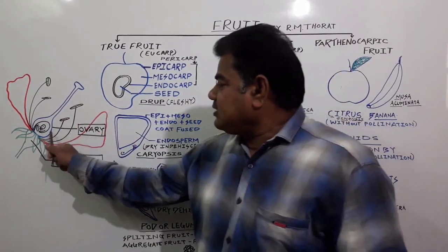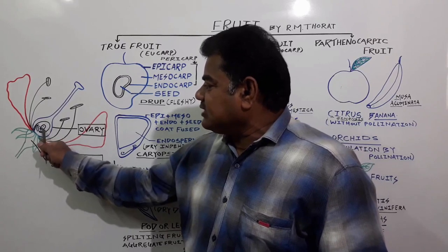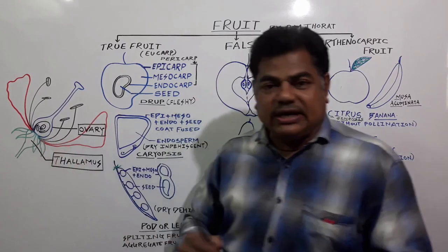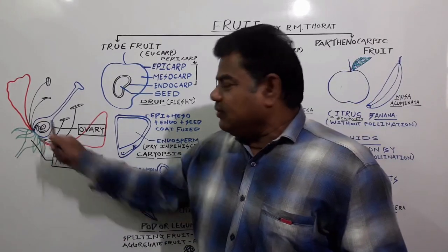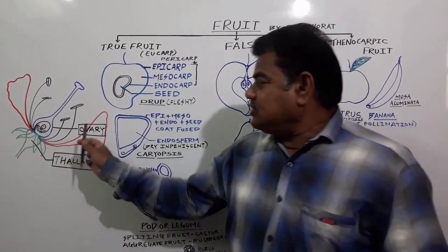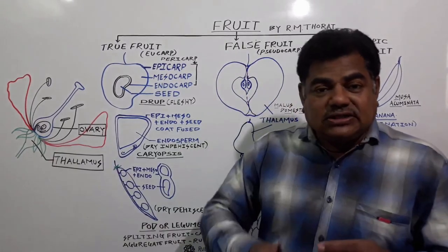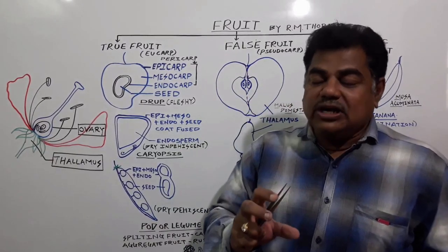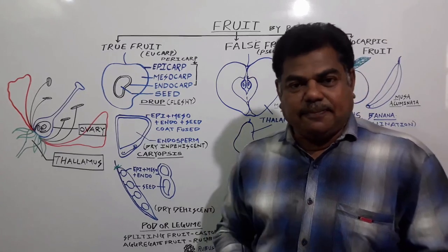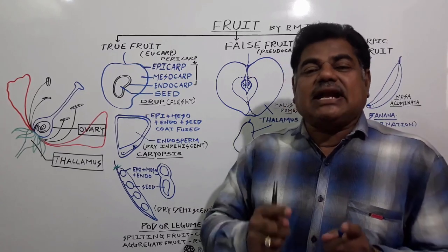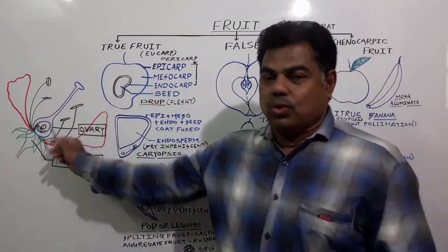From the ovary wall — the ovary — and inside the ovary the ovule, after fertilization the ovule gets converted into seed and the ovary wall gets converted into the fruit wall, and ultimately fruit formation takes place. A fruit is nothing but a ripened ovary.